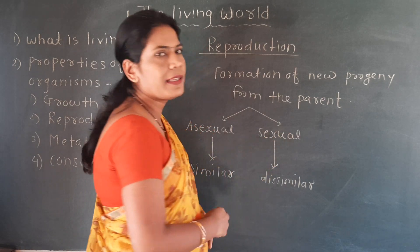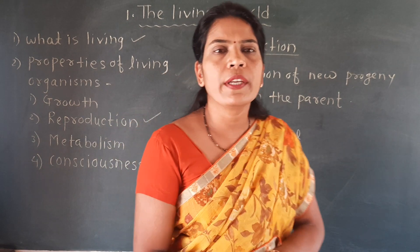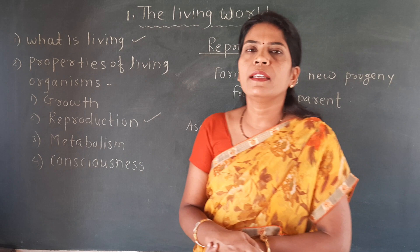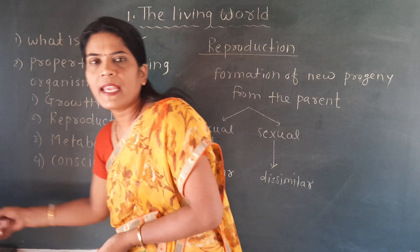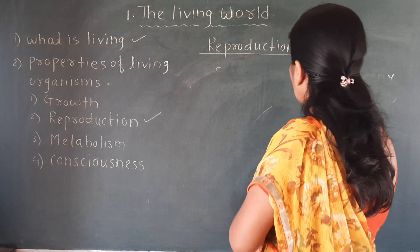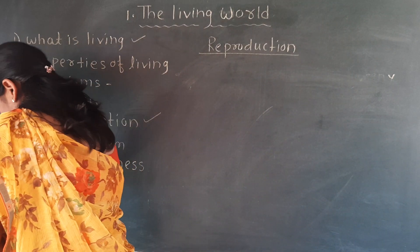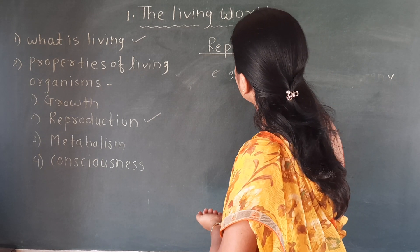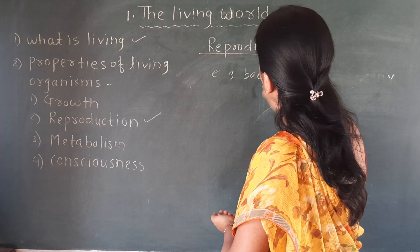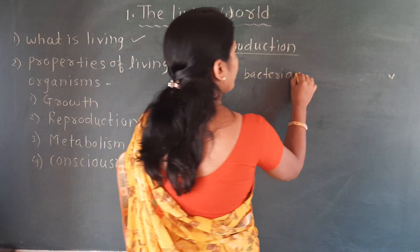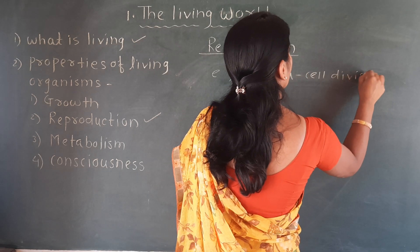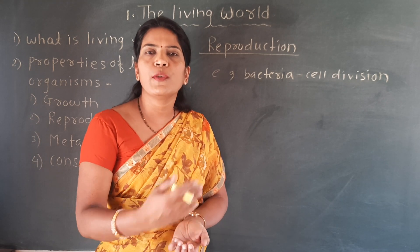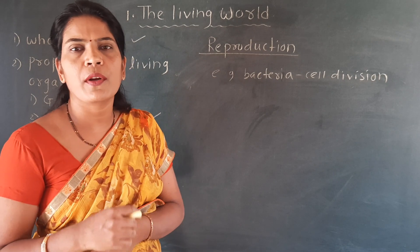There are a number of examples in every living organism showing different types of reproduction. For example, bacteria, which we call an initial organism, show reproduction by cell division. The bacteria simply divides, and at the same time we say that growth as well as reproduction take place in this bacteria. So cell division is the method of reproduction in bacteria.